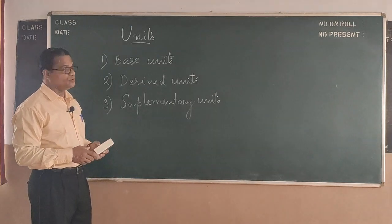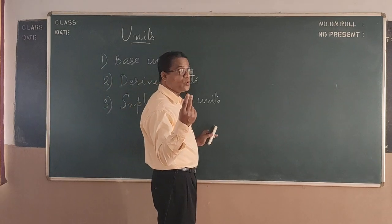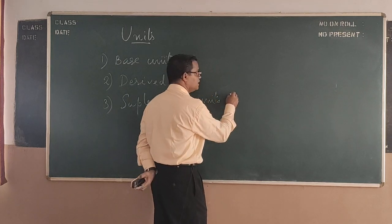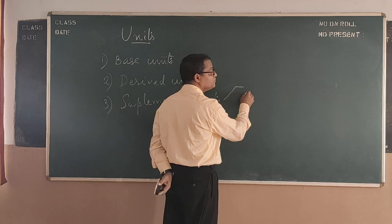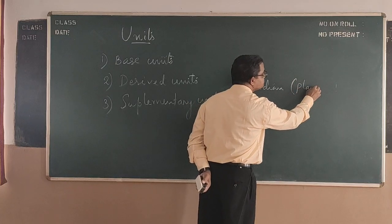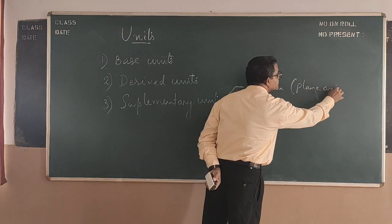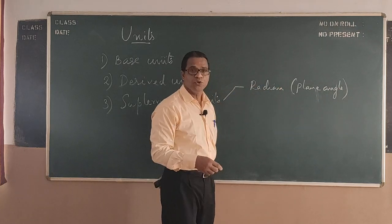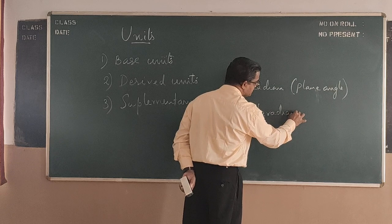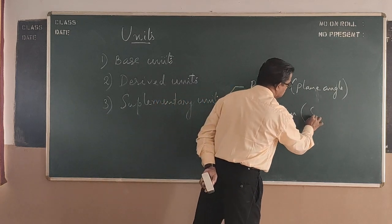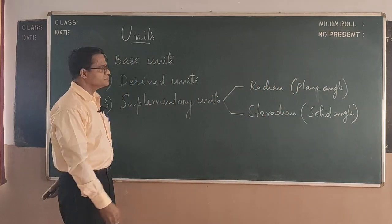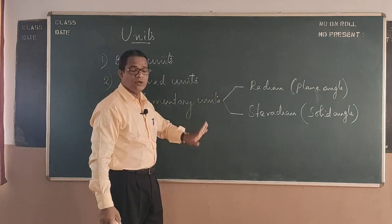Supplementary units — as we have only two quantities there — for example, for angles, we have radian. For plane angle, radian is the unit. And steradian is the unit for solid angle. That's only two quantities there.